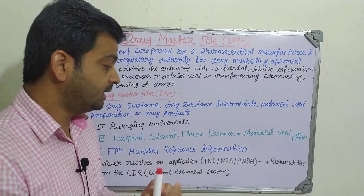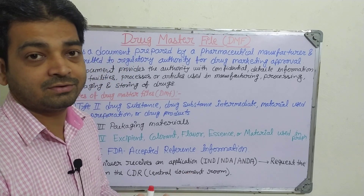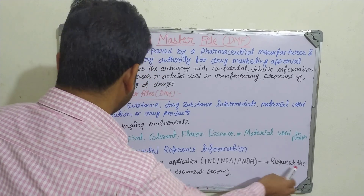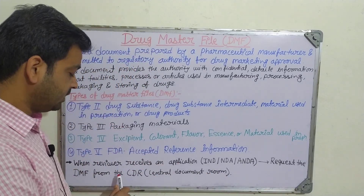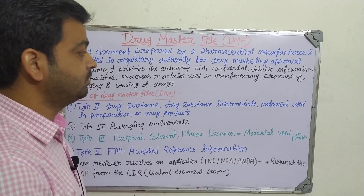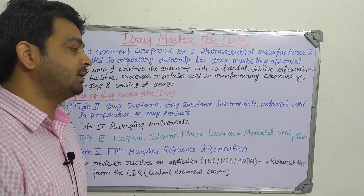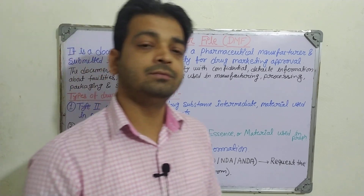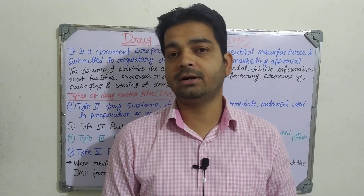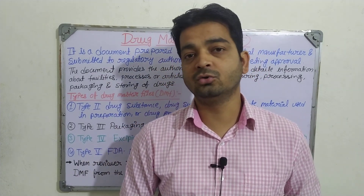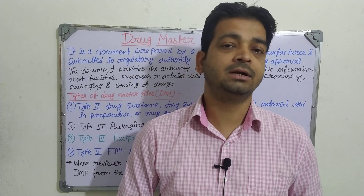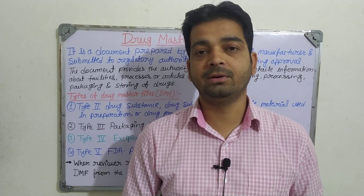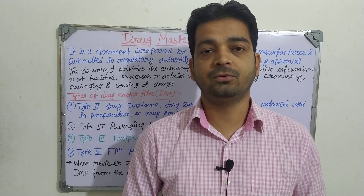For abbreviated new drug applications, which are used when going for generic drugs, the DMF is also required. The reviewer requests the DMF from the Central Document Room (CDR) to review all details about the drug — the drug substance, excipients, and everything used during formulation and preparation — so they can reach a conclusion about whether the drug is eligible for approval. That is why the DMF is very important for drug approval.